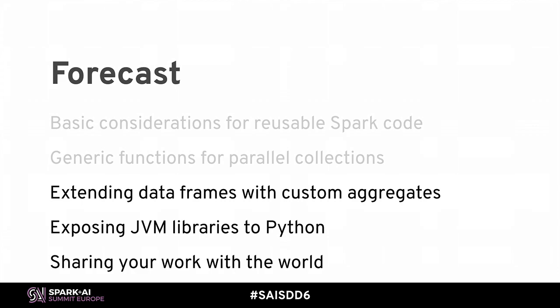Thanks everybody. So in the first half of the talk, my friend Will introduced a couple basic themes. The first is that you need to program libraries defensively because your code is going to be used in ways that you didn't expect. The second theme is that doing things the right way — the way that Spark expects them to be done — is going to make your life easier and also life easier for your library users. Then he talked about some of the consequences of those themes for actually writing libraries.